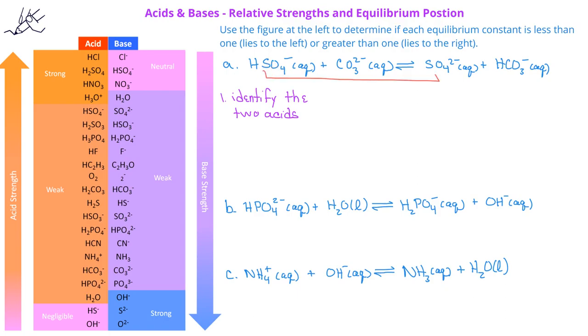On the product side, we have SO4²⁻, which we know is the conjugate base of HSO4⁻, and we have HCO3⁻. On the product side, the HCO3⁻ will act as the acid.